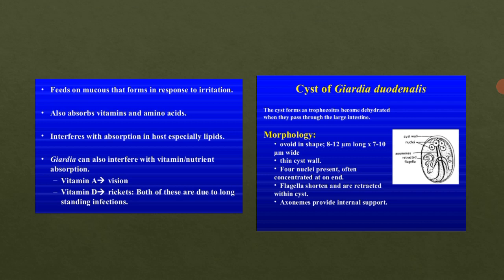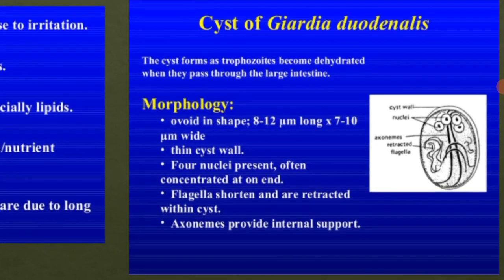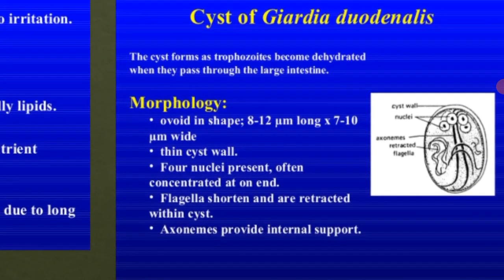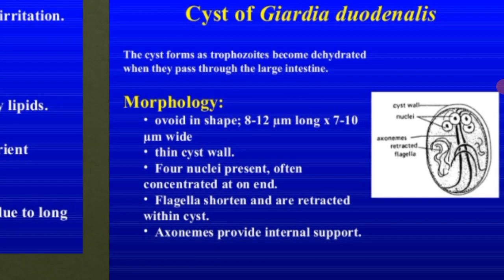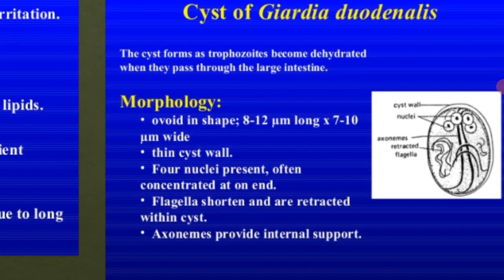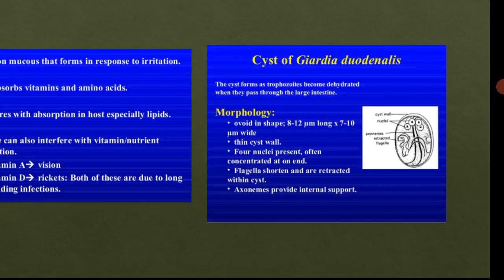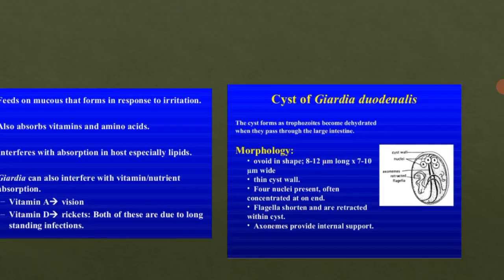Axonemes provide internal support within the cyst. You can see the two strands of axonemes in the structure — these provide internal support for their adherence and structural capabilities.